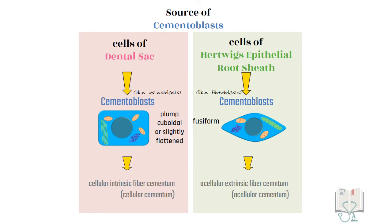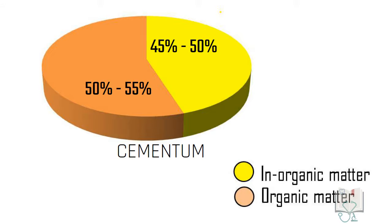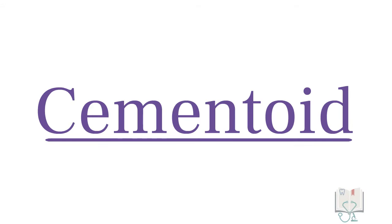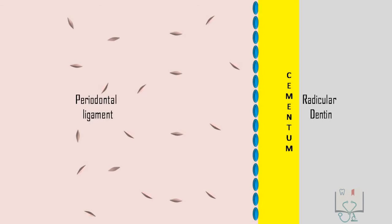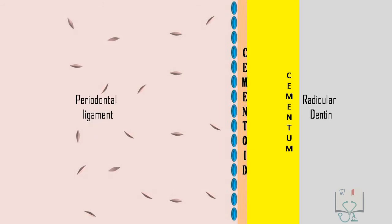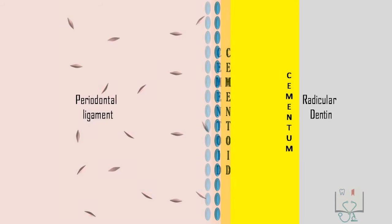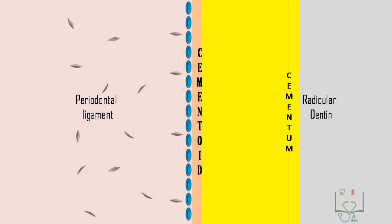Cementum has two components: organic component and mineralized component. Formation of cementoid: as mineralization always follows organic matter deposition, there is an outermost thin layer of non-mineralized cementum just adjacent to the cementoblast called cementoid. As the cells deposit cementum and move backwards, the old layer of cementoid gets mineralized to form cementum and a new layer of cementoid gets deposited.